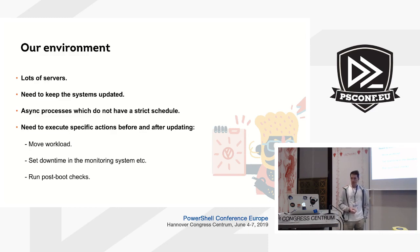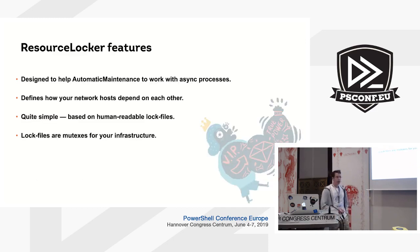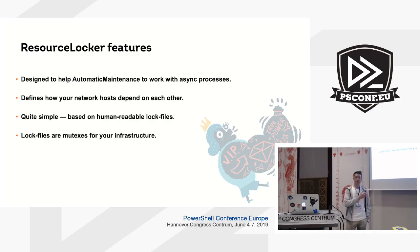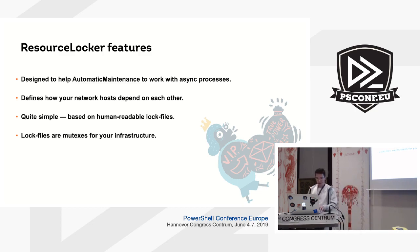To fight this problem, we developed an infrastructure locking framework. This is a powerful model designed to help our automatic update system detect if a host can be updated right now or if it is busy with some tasks. It uses log files — it puts them on a network host when a task is run against that host. Let's take a look at how it actually works.